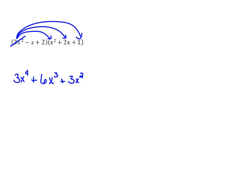Now let's move on to the minus x and let's distribute it. So negative x times x squared would be negative x cubed. Negative x times 2x would be negative 2x squared. Negative x times a positive 1 would be negative x.